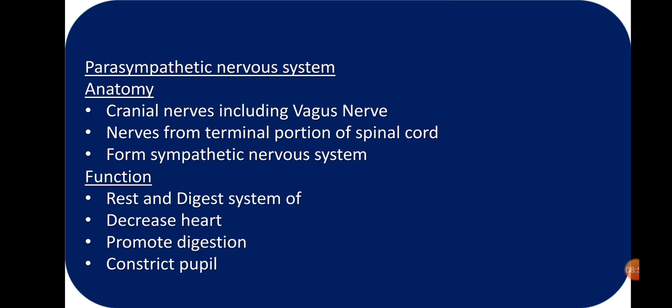Now for the parasympathetic nervous system: its anatomy includes cranial nerves — those nerves that come out of the brain — including the vagus nerve. Cranial nerves are small nerves, and among them the vagus nerve is one large nerve coming from the brain. The parasympathetic system is made up of the vagus nerve, cranial nerves, and nerves from the terminal portion of the spinal cord. Its function is the rest-and-digest response when the body is in a resting condition.